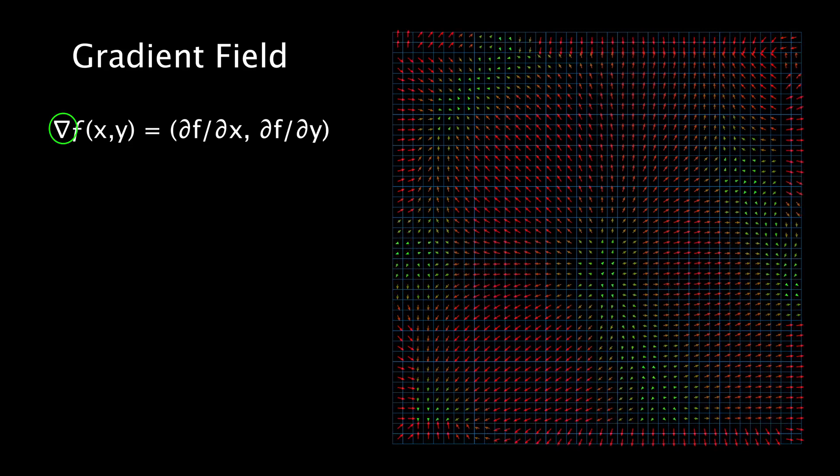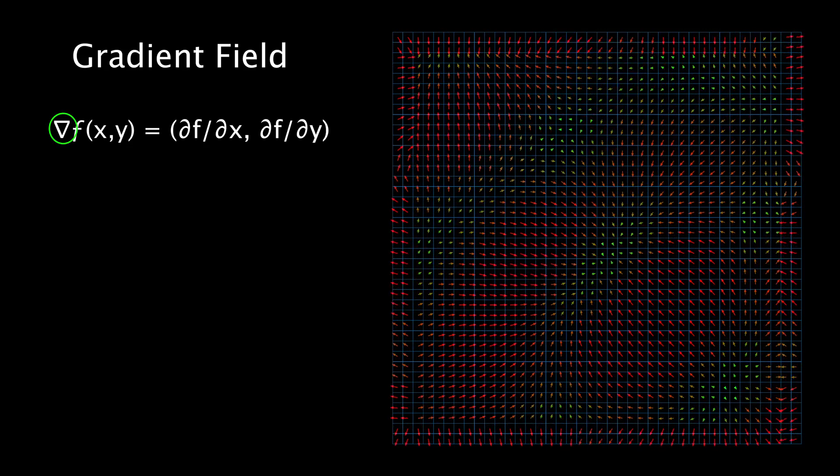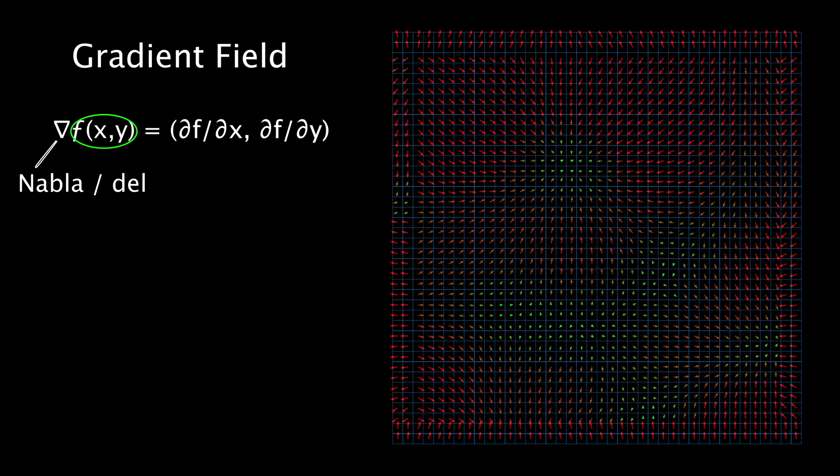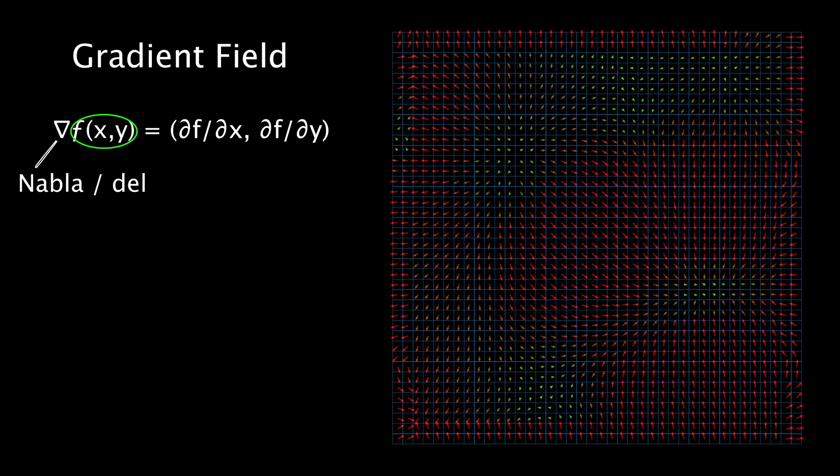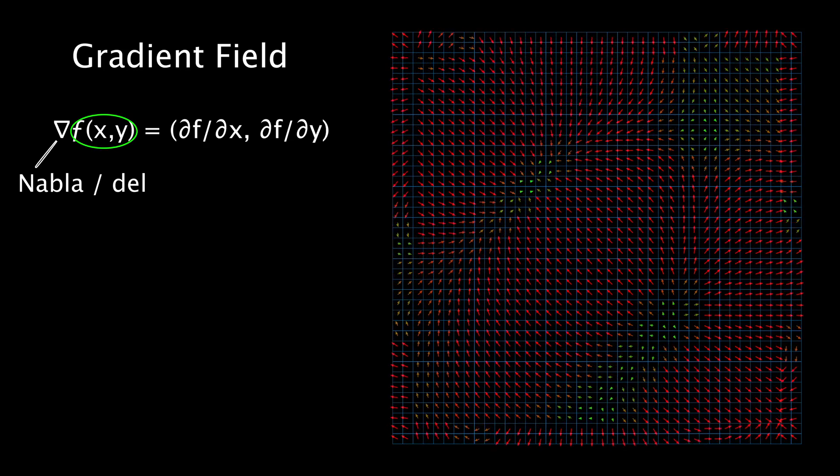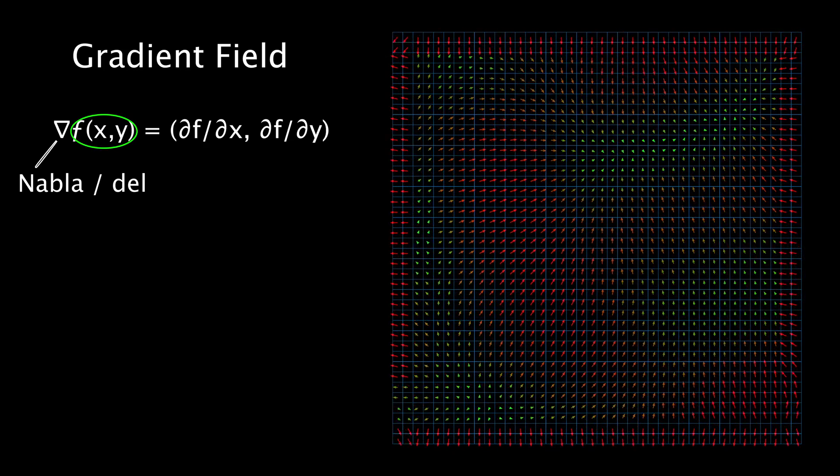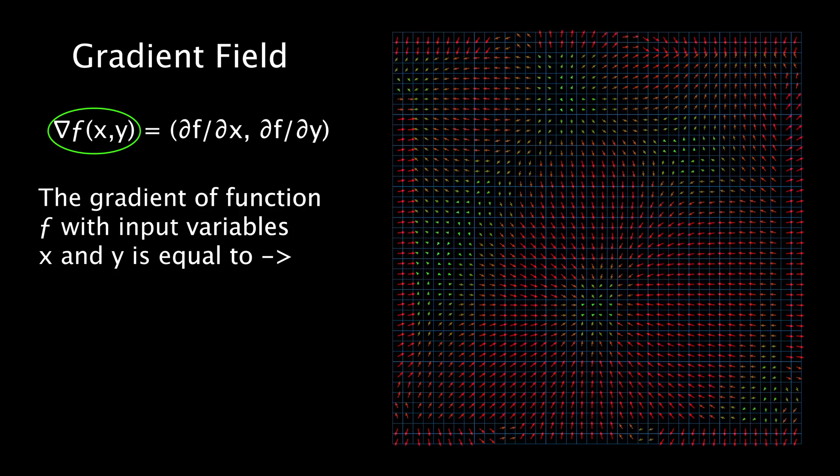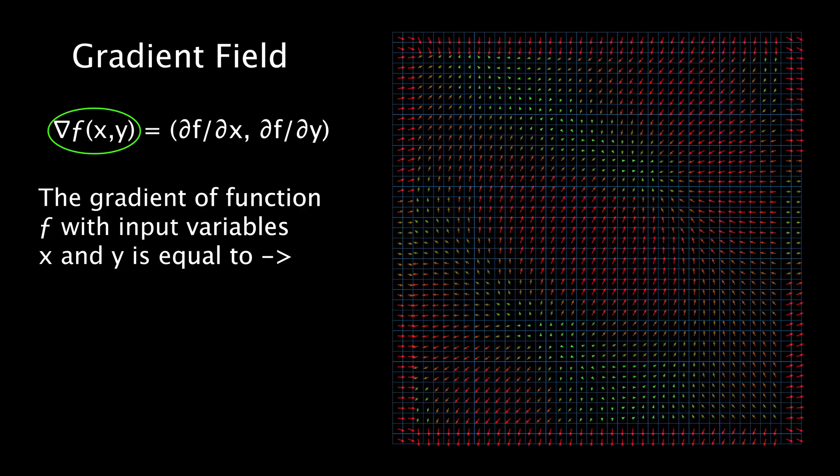This reverse triangle here indicates the gradient operator, and it's called nabla, or del. f of x and y is the function that fills our scalar field. It takes us inputs two variables and gives us output a single scalar number. So the left side of the formula means the gradient of function f with variables x and y is equal to...